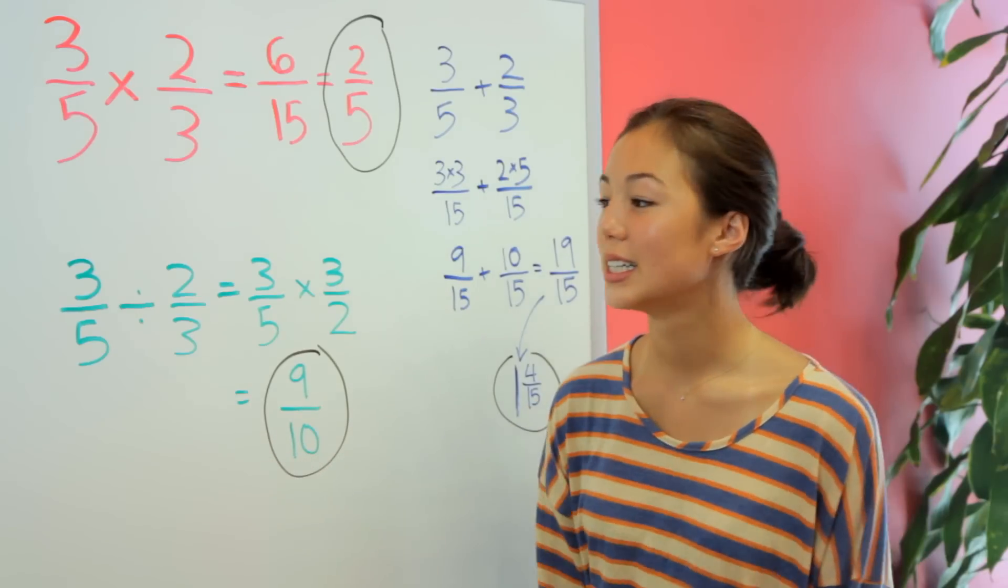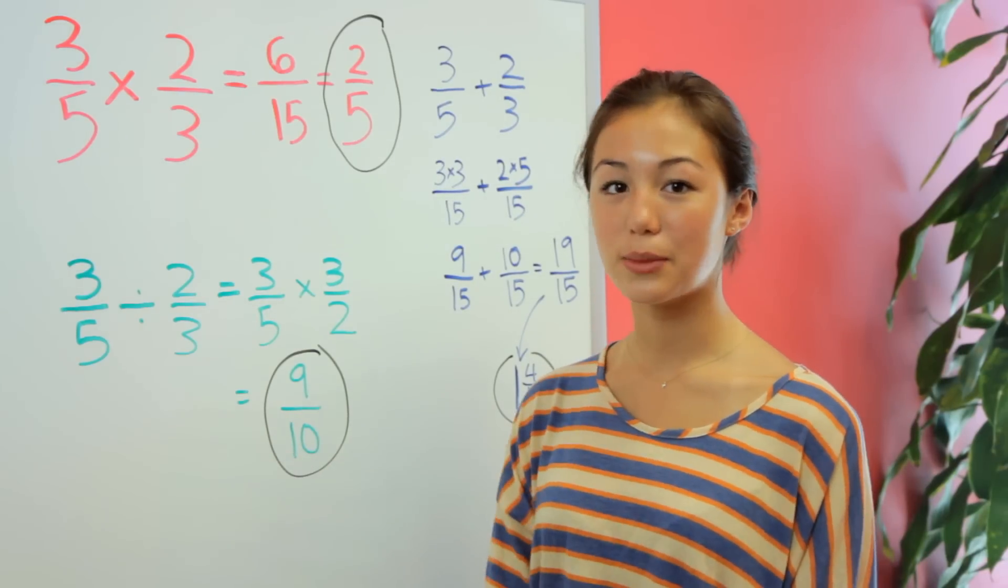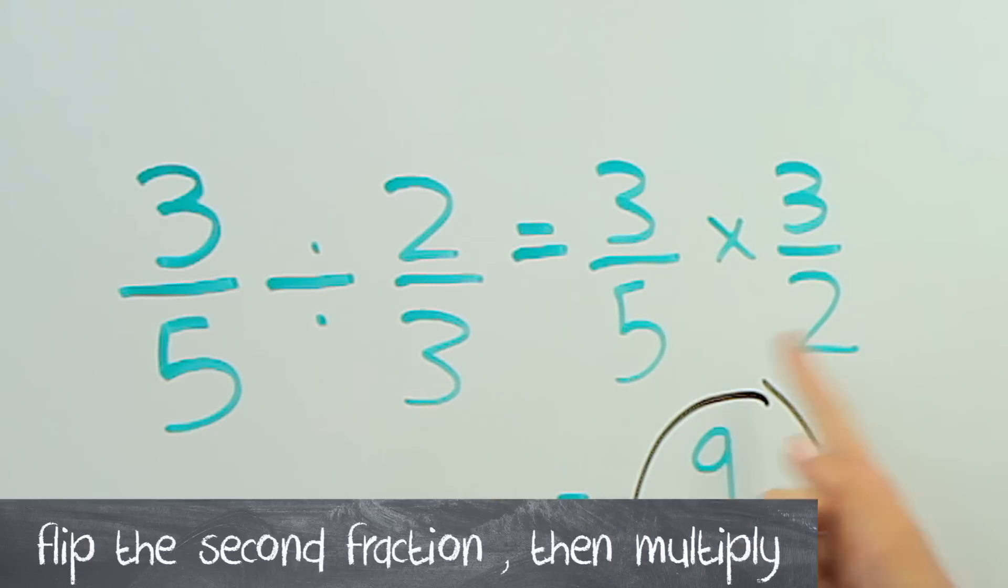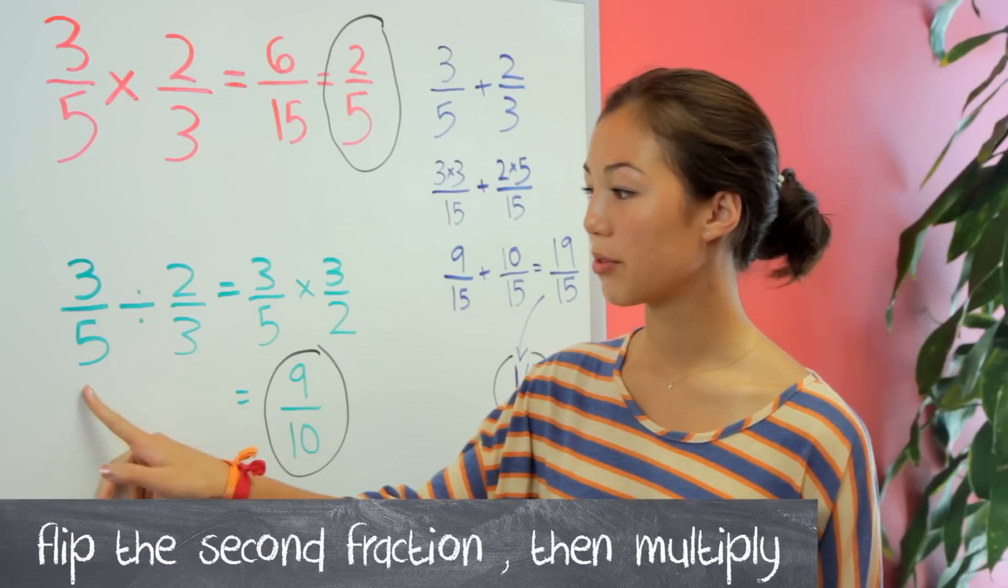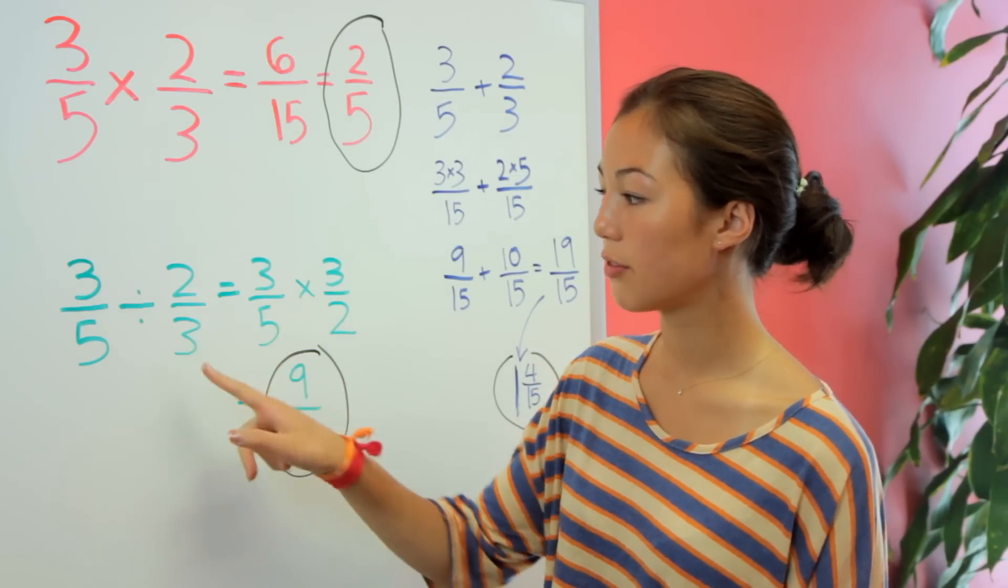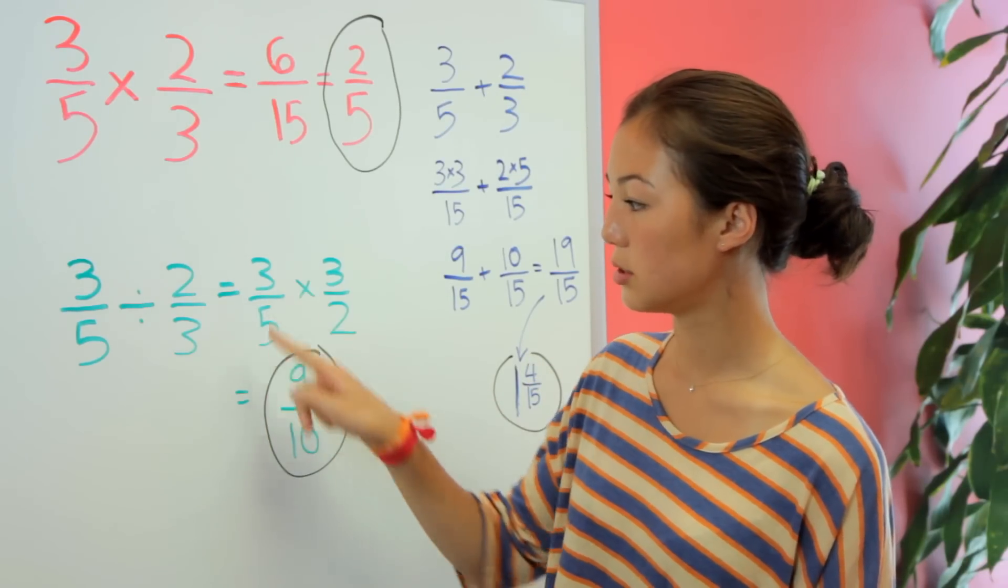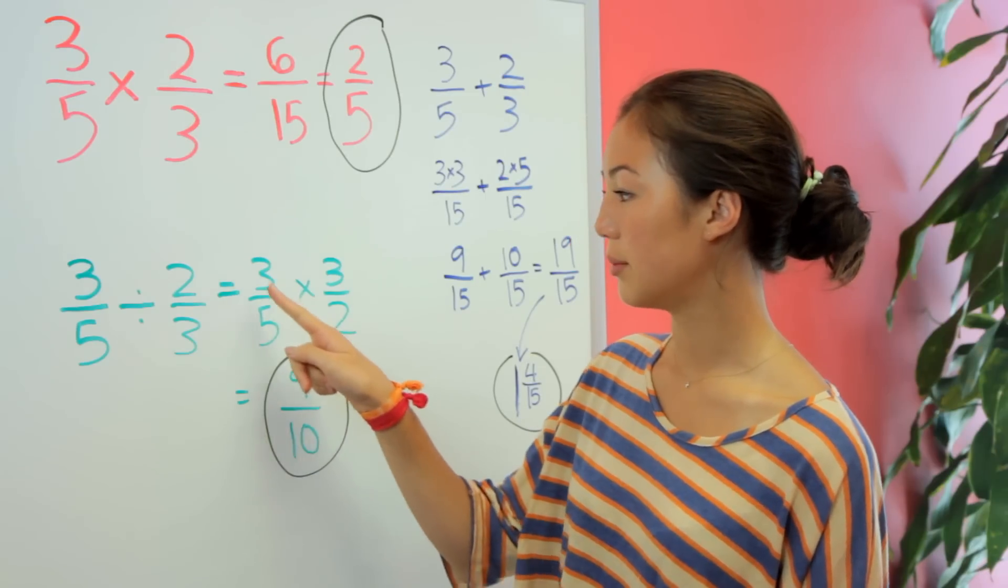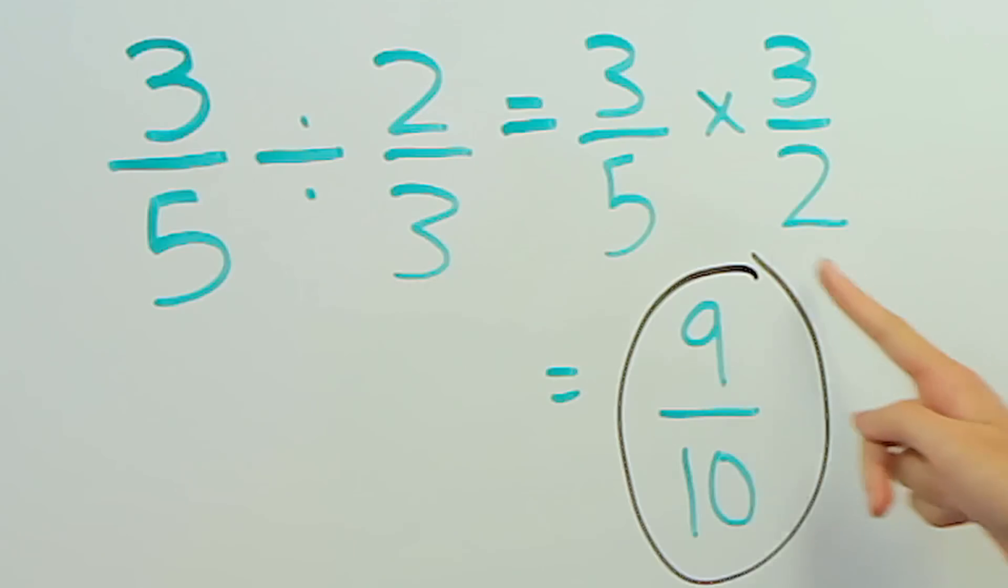Now with division, similar to multiplication, what we do here is we flip the second fraction and then multiply. So we have 3 fifths divided by 2 thirds, then we're going to flip this to 3 halves and just use multiplication. So 3 fifths times 3 halves, we multiply the top, 9, multiply the bottom, 10, and we get 9 tenths.